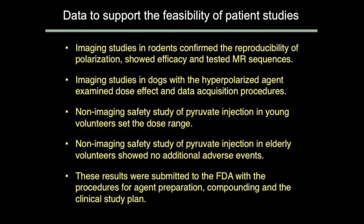The first thing we did was all of these rodent studies. The next was imaging studies in dogs, because apparently a dog's prostate looks very much in imaging terms like a man's prostate. We were able to get dogs into our scanner and do our experiments. We wanted to examine the dose effect and determine what kind of dose of this agent we needed, and also confirm the data acquisition procedures. There were also a number of studies that needed to be done to provide information to the FDA in order for them to give us permission to do these experimental studies in people.